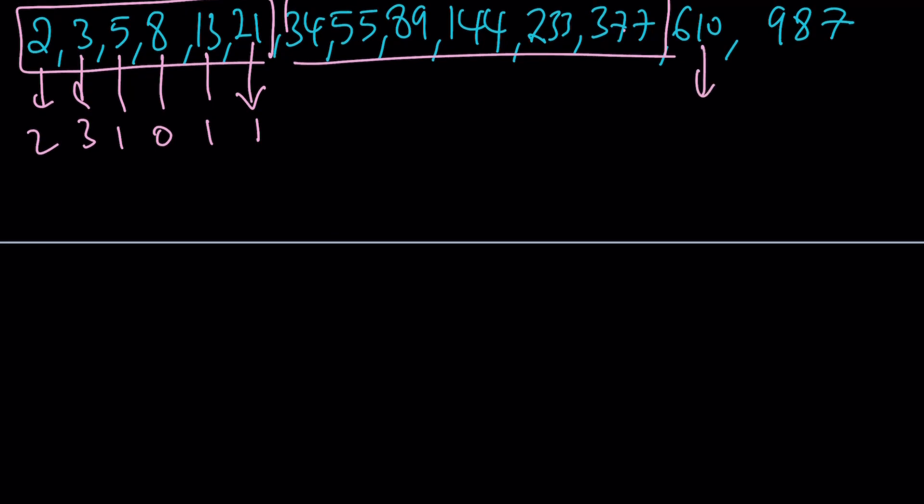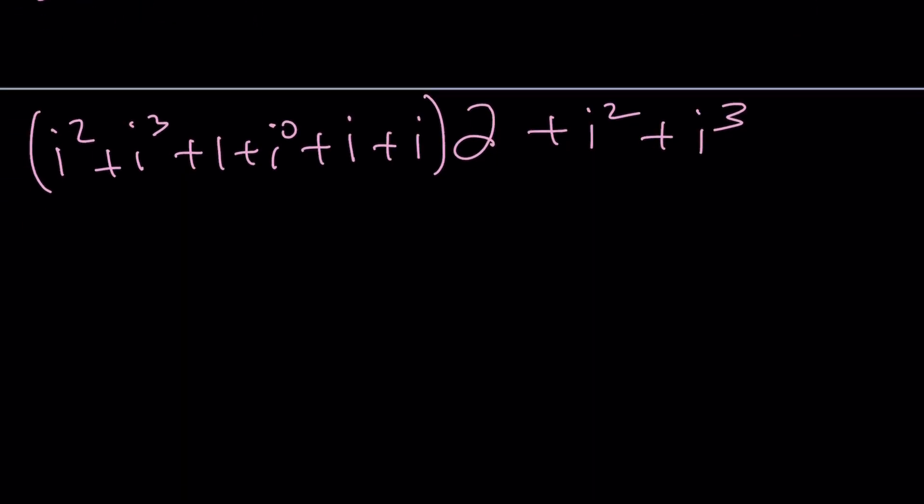And, of course, this is going to be two and three, right? So, here's what you have. i to the second, i to the third, i, i to the zero, plus i, plus i. You're going to have this twice because of this. And then plus i squared plus i cubed. That's it. Let's go ahead and evaluate this and that will be done.